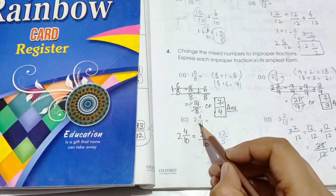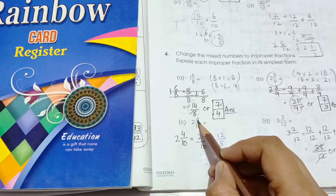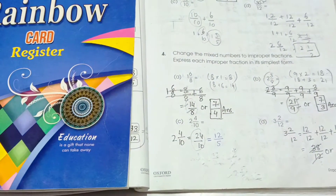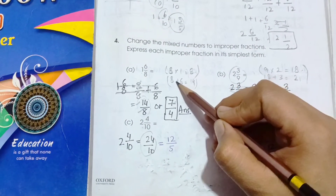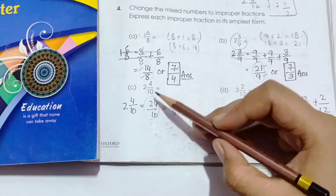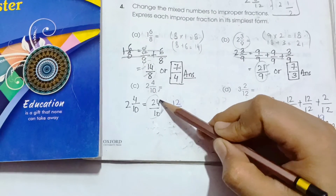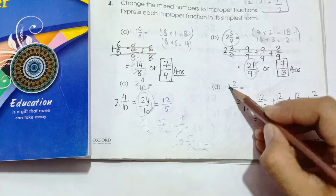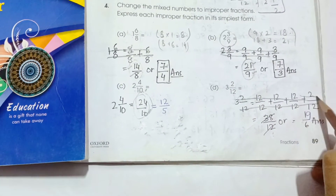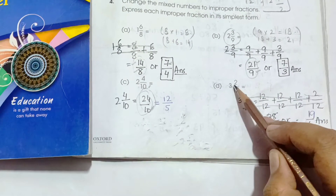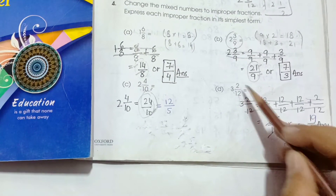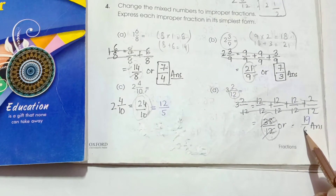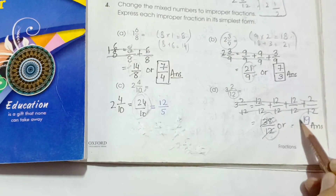For 2 and 4 upon 10: 10 times 2 is 20, and 20 plus 4 is 24. The denominator remains 10. Simplify 24 upon 10: 2 fives are 10 and 2 twelves are 24, giving 12 upon 5. For number D, 12 times 3 is 36, and 36 plus 2 is 38. So the answer is 38 upon 12. Now cut 38 and 12 by 2: 2 sixes are 12 and 2 nines are 18, but checking: 2 ones are 2, so the simplified answer is 19 upon 6.